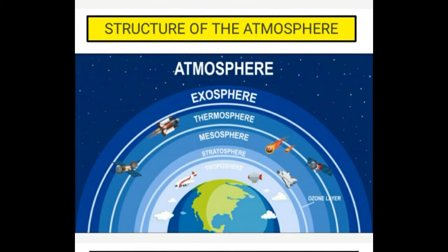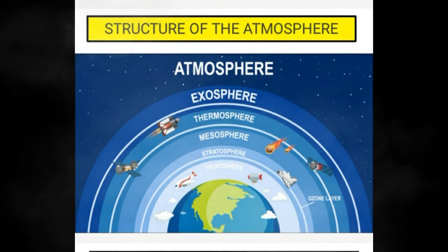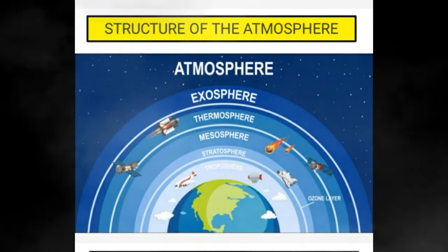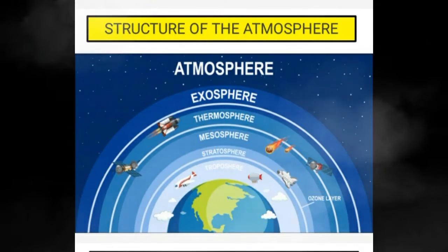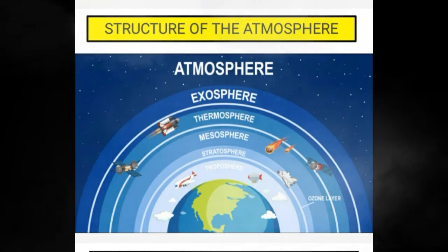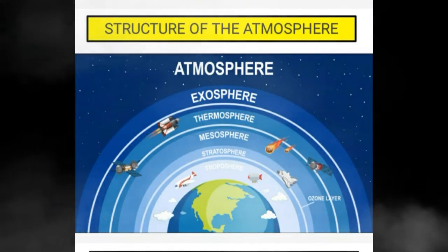Next we are going to see about the structure of the atmosphere. The atmosphere has a layered structure. On the basis of composition, density, and temperature, the atmosphere can be divided into 5 layers: troposphere, stratosphere, mesosphere, thermosphere, and exosphere. You can see these in the figure. Let's discuss each layer in detail.